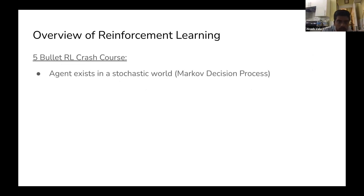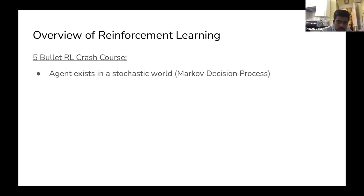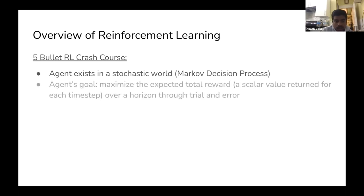The goal of reinforcement learning is that there's an agent that exists in a stochastic world. Formally, this is defined by something called a Markov decision process. There are discrete states, and the agent takes an action which transitions it into another state in a stochastic way. Every transition after taking an action, the agent receives a reward, which is a scalar value.